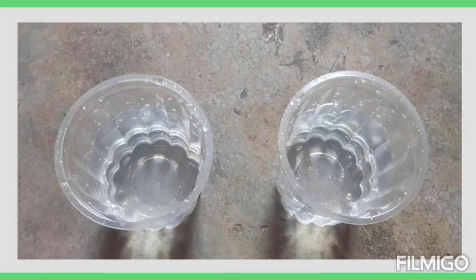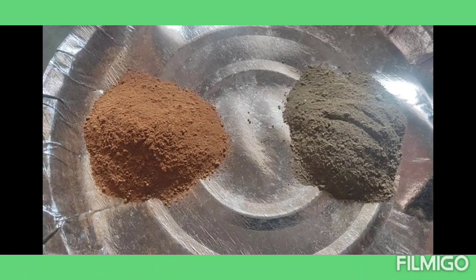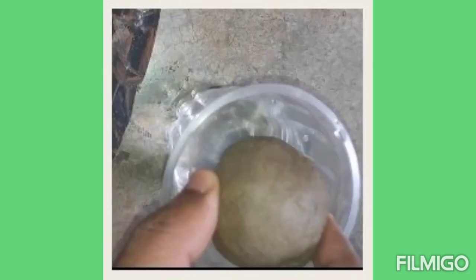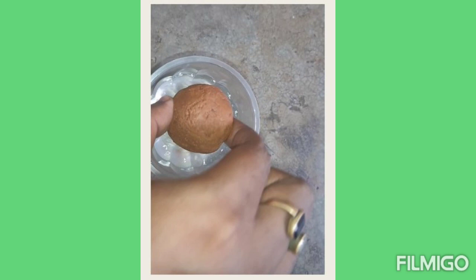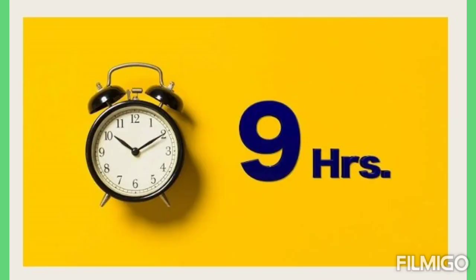Now see the picture. I am taking two disposable glasses and putting one-third water in each. I am taking two and a half spoons of each soil sample, adding water, and making balls out of them. Then I put these balls in the glasses and leave them for three hours, six hours, and nine hours.